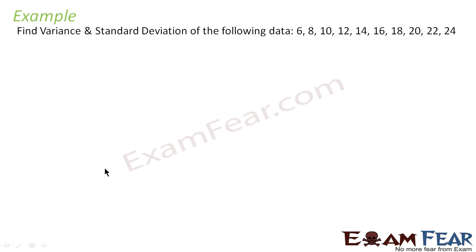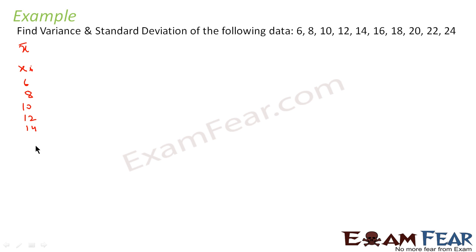In this example we have to find the variance and standard deviation for the given data. First we need to find the mean. The xi values are: 6, 8, 10, 12, 14, 16, 18, 20, 22, 24.